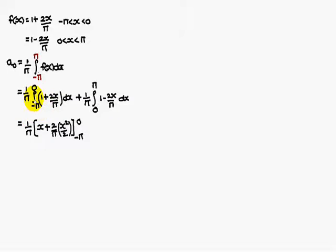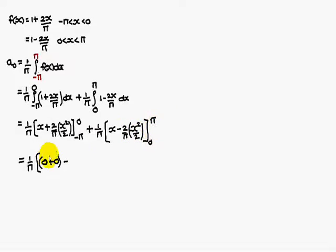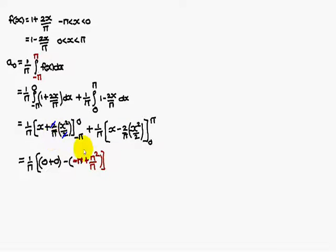Therefore, 1 by pi times: integral of 1 is x, and 2 by pi times integral of x is x squared by 2, between the limits minus pi to 0; plus 1 by pi times integral of 1 is x, minus 2 by pi times x squared by 2, between the limits 0 to pi. Substituting 0 gives the entire expression as 0. Substituting minus pi: minus pi plus pi squared by pi.